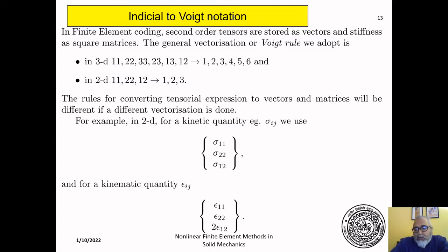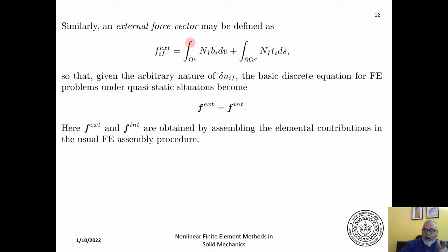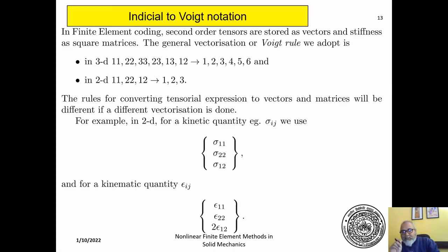Once we have derived a particular equation — for example, the expression for F_I^external in terms of our new notation with small letter and capital letter notation — we need to convert this into a form that can be coded into the computer. We do this transfer of the equation from indicial notation to what is known as Voigt notation. It's a recipe and I'm going to explain it to you.